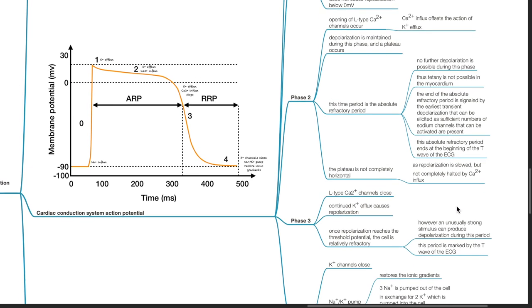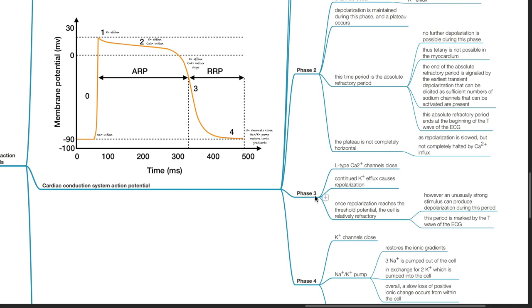During Phase 3, L-type calcium channels close and continued potassium efflux causes repolarization. Once repolarization reaches the threshold potential, the cell is relatively refractory; however, an unusually strong stimulus can produce depolarization during this period. This period is marked by the T wave of the ECG.